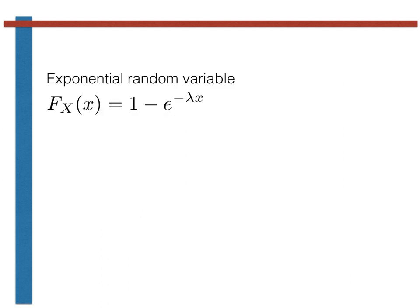To make all this concrete, let's use these ideas to generate an exponential random variable. You will have learnt elsewhere that the exponential random variable has the cumulative probability distribution function shown at the top of this slide. As I discussed on the previous slide, we are going to generate a uniform random variable u in the usual way, and we are going to say that this u value is the value of the cumulative probability distribution function evaluated for a particular value x of the exponential random variable. We can thus find the value of the exponential random variable X by using the inverse function of the cumulative probability distribution function on u.